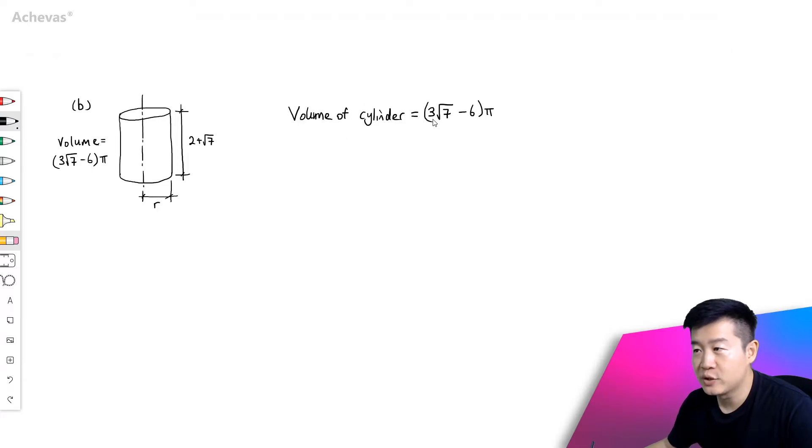So the volume is given to us as 3√7 - 6π, and volume is πr²h, the height. Height is given to us as 2 + √7. So this is equal to 3√7 - 6π.